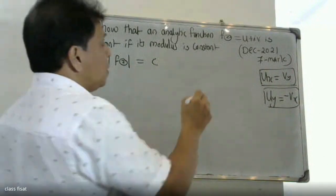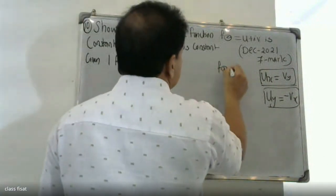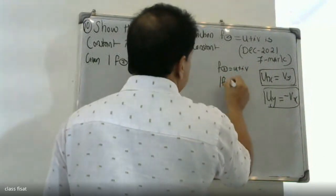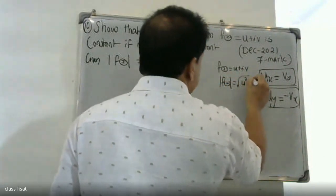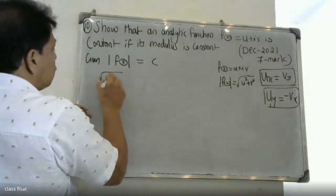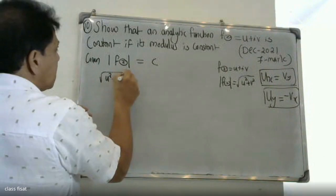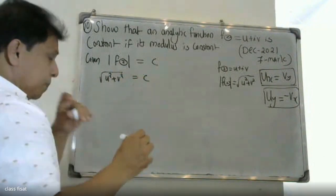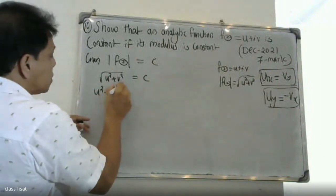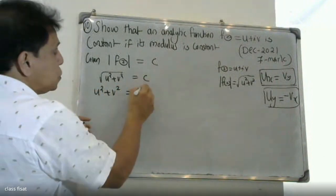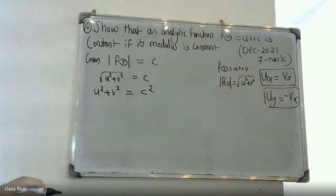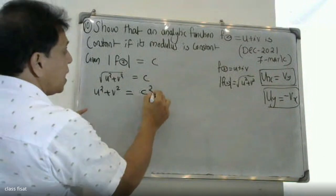For f(z) = u + iv, the modulus is |f(z)| = √(u² + v²) = c, where c is a constant. Squaring both sides, we get u² + v² = c². This will be equation 1.